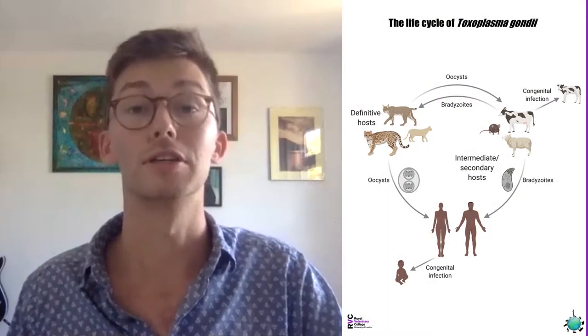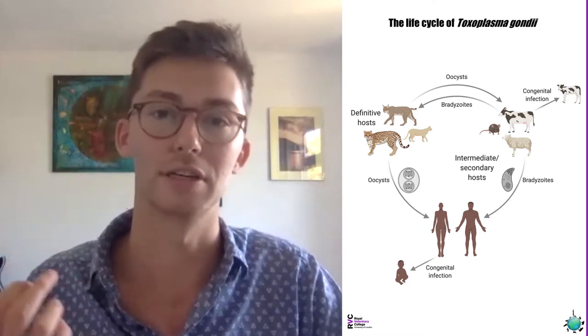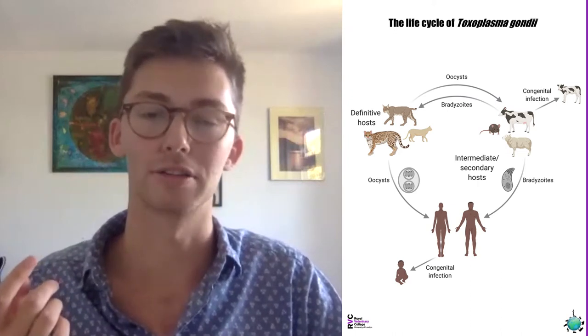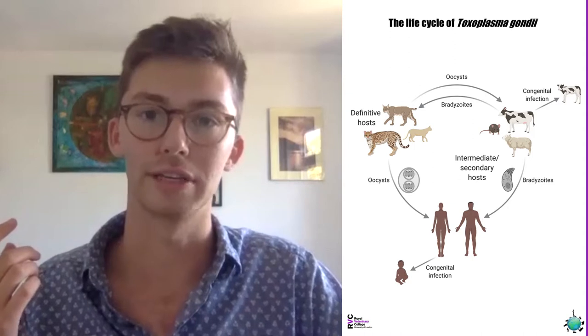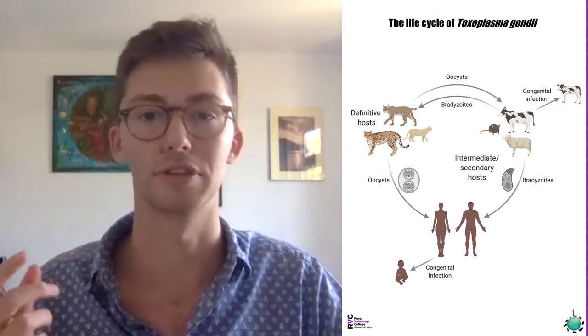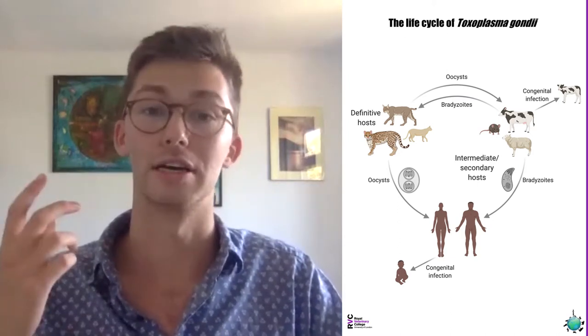But first let's just see a little bit about how the parasite is transmitted. If we take a look at the transmission diagram over here, you can see that the definitive hosts — the cats and their wild relatives — harbour the sexual stage of the parasite. What I mean by that is that they are the only animals in which the parasite can reproduce, and they do this within the small intestine of the cat.